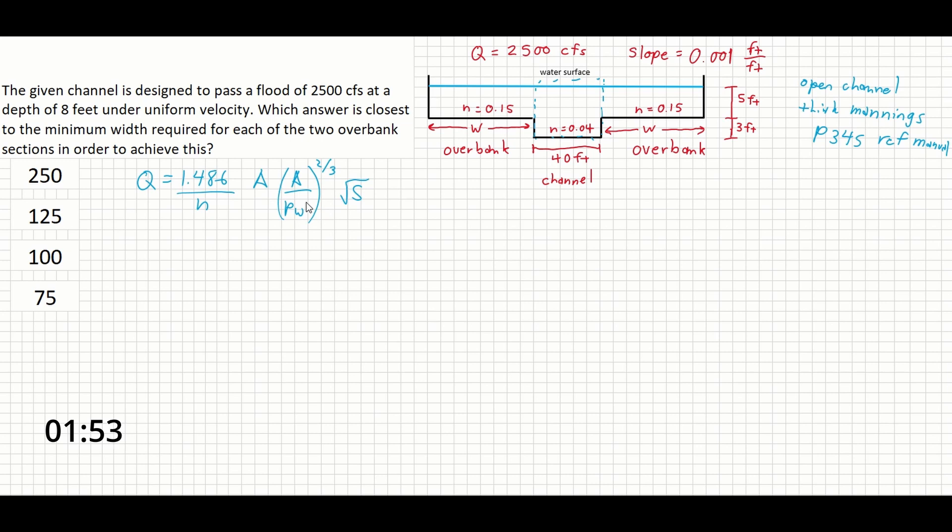So note here that the width is a function, or is one of the components rather, that goes into area and goes into wetted perimeter. So we're going to be playing with these terms to solve for the correct amount of flow once we know how much flow the channel itself can pass.